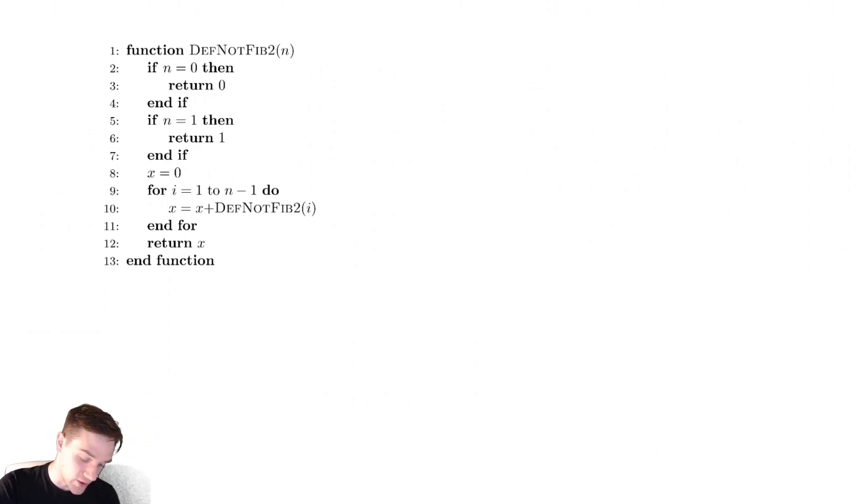If we look at this function we have two base cases: one when n equals zero we return zero, one when n equals one we return one, and now we actually have some sort of looping structure happening here.